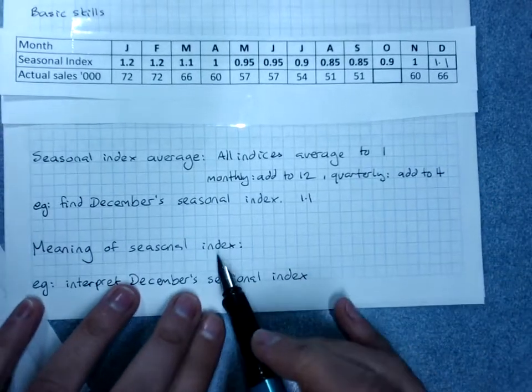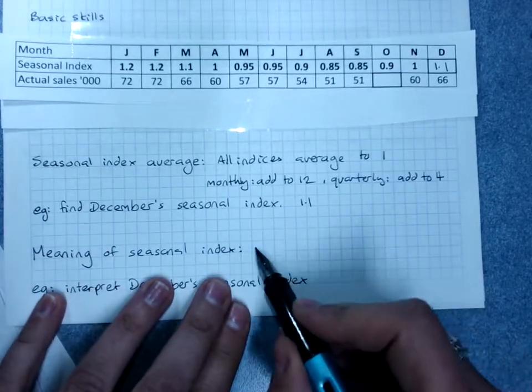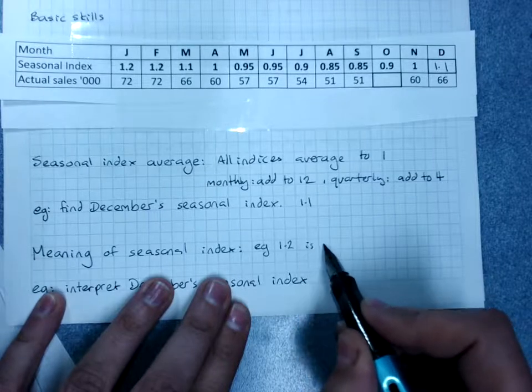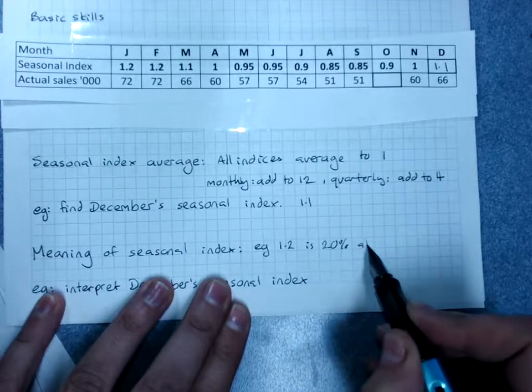The meaning of the seasonal index we just tackled. For example, 1.2 is 20% above average.